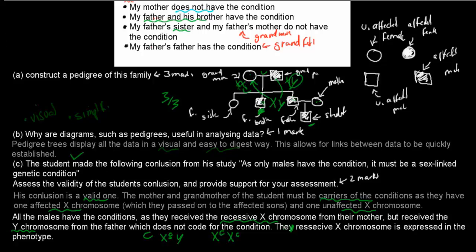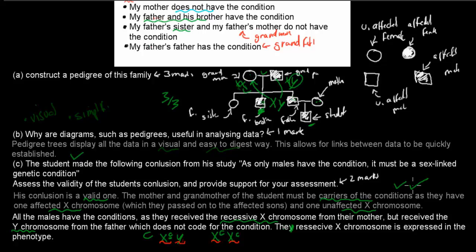This is proof that the condition is carried on the sex chromosomes, because only the sex chromosomes have the added factor that the Y chromosome does not code for the condition. The males all got the recessive X chromosome from their mother, while the females were all carriers but did not have the condition because they received one healthy X from the father — which the boys did not receive. Those observations earn you the two marks.